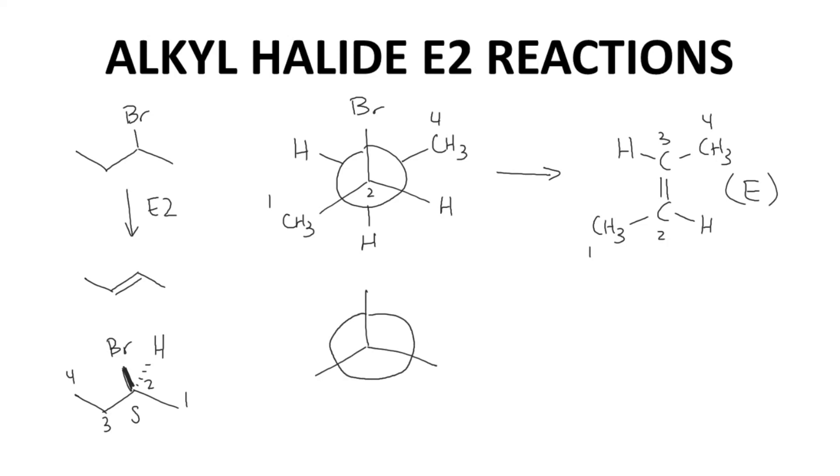Let's hold C2 the same and just rotate the back carbon. If this structure did an E2 we would get an alkene product like this and now the two methyl groups off the alkene are cis to one another. This is the Z-alkene.